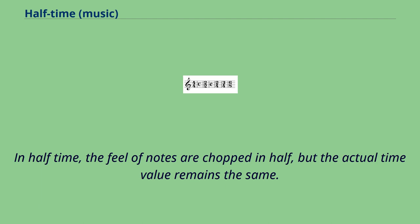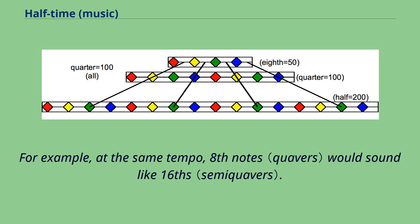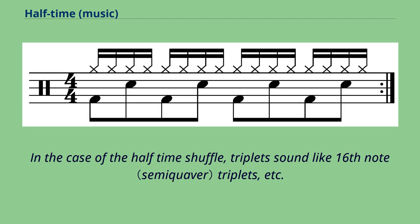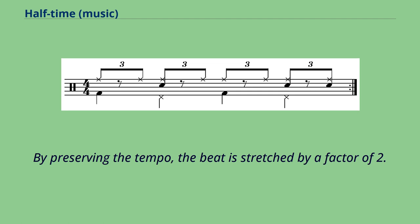In halftime, the feel of notes is chopped in half, but the actual time value remains the same. For example, at the same tempo, eighth notes would sound like sixteenths. In the case of the halftime shuffle, triplets sound like sixteenth note triplets. By preserving the tempo, the beat is stretched by a factor of two.